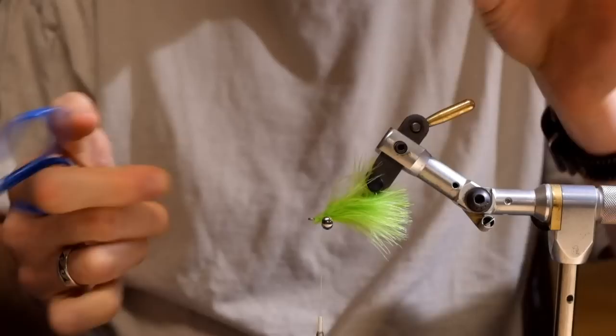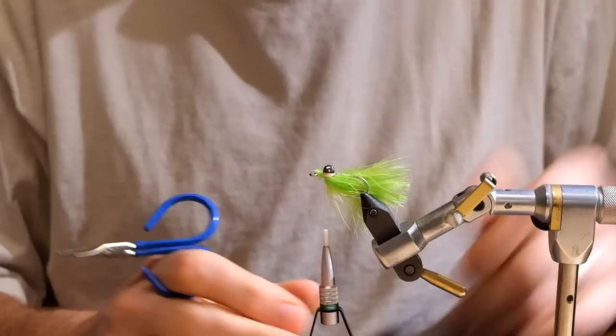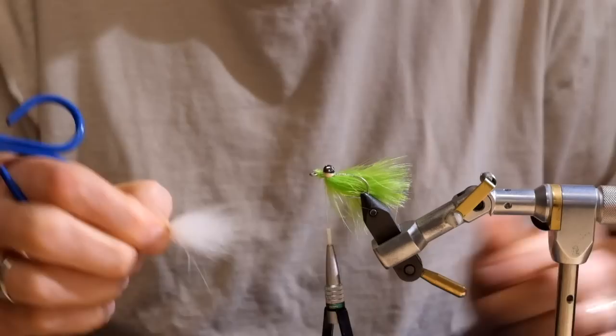I'm gonna trim these off. Try and trim them as close as you can to the eyes so that the ends, once you trim them, don't protrude into the hook eye. To get those ends into the hook eye, it's real hard to get them back out again.